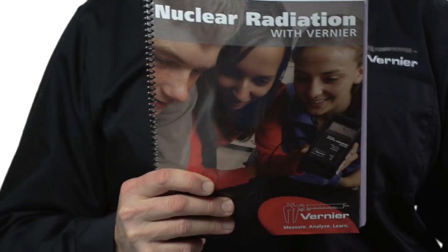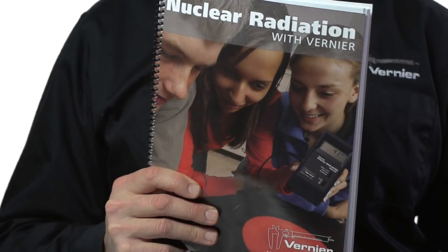I'm John Gastineau, staff scientist and physicist with Vernier Software and Technology. I'm going to show you one of the experiments from the Nuclear Radiation with Vernier book. This is a very short book. It just has six activities in it. It can be used either with a chemistry or physics laboratory course.